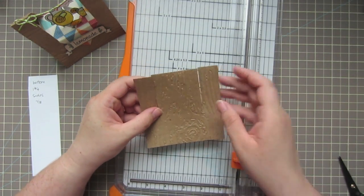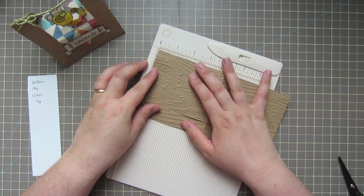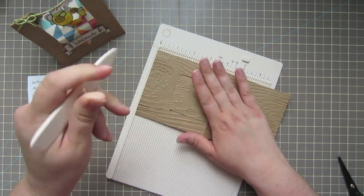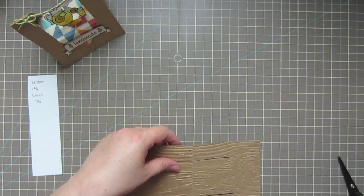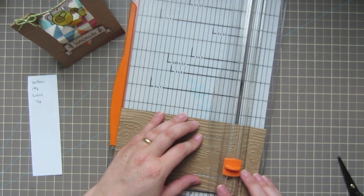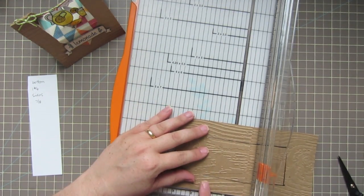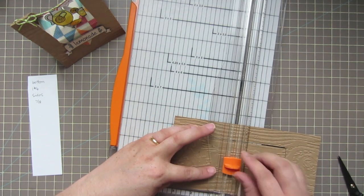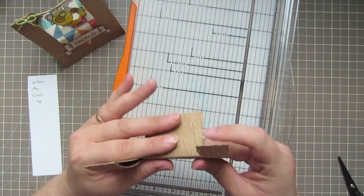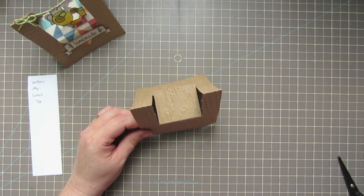So I end up with something like this, and then I'm going to take my Martha Stewart mini scoreboard and I'm going to go ahead and score the bottom of that line. Then I'm going to take this and trim off the end, and then I'm going to trim this piece down to one and seven-eighths. And then what we're left with is this little stand.